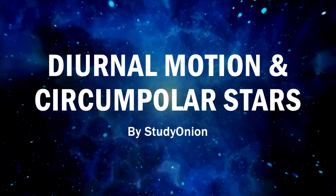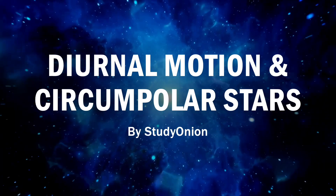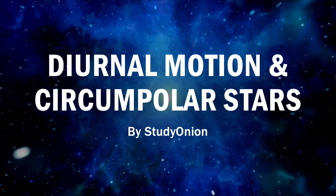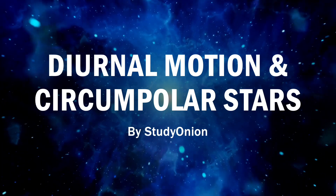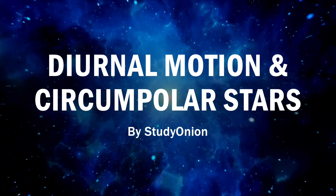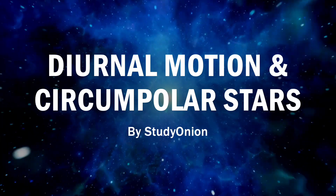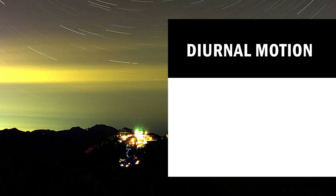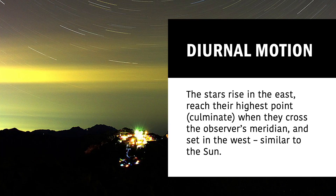Hello everyone and welcome back to Study Onion. Today we're going to be talking about diurnal motion and circumpolar stars. Stars rise in the east and reach their highest point, or culminate, when they cross the observer's meridian, and then they set in the west. This is quite similar to the sun, which also rises in the east and sets in the west.